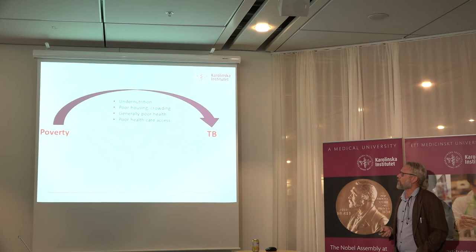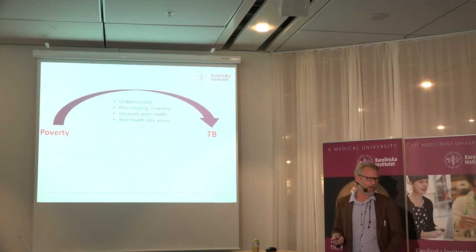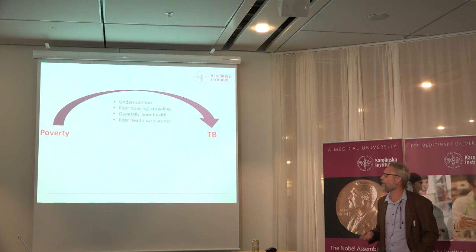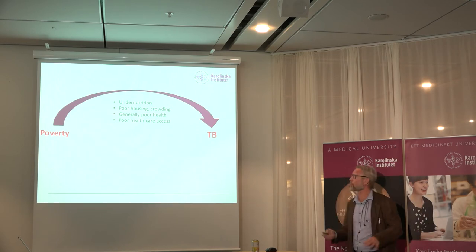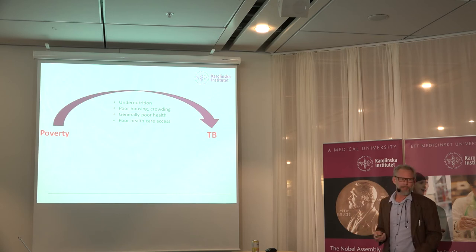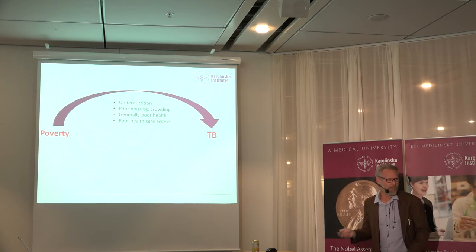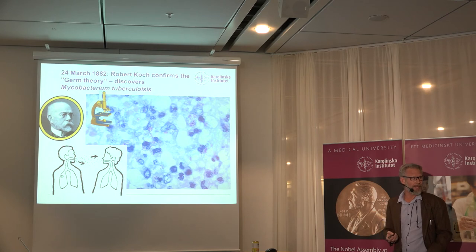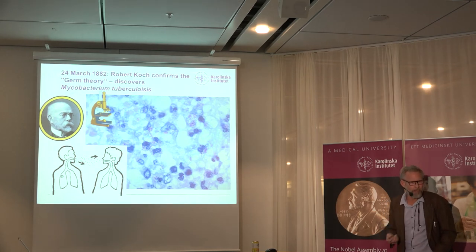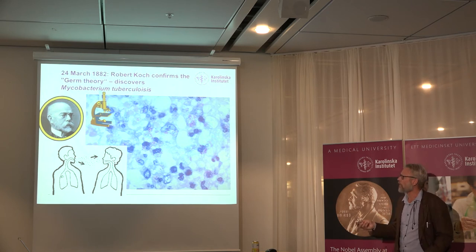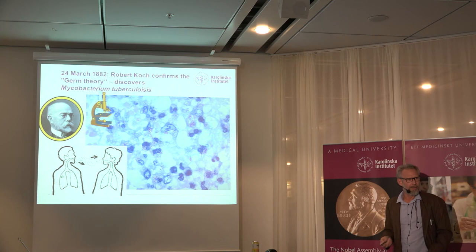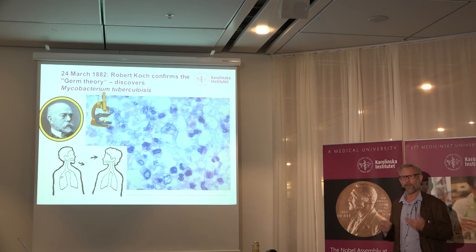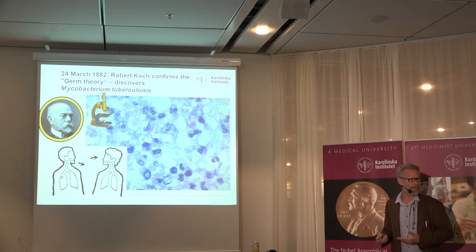Virchow stipulated a model: poverty leads to TB, mediated through undernutrition, poor housing and crowding, generally poor health breaking down your immune system, and poor healthcare access. Of course, TB is not caused by poverty — it's caused by bacteria. His contemporary Robert Koch discovered the bacteria a few decades later and proved the germ theory: this is a communicable disease. Koch was right, but Virchow was no less right. He was talking about the causes that create the fertile ground for the bacteria to take hold, to thrive and cause disease.